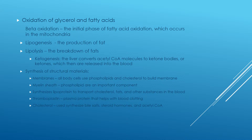Synthesis of structural material: all body cells use phospholipids and cholesterol to build membranes. Phospholipids are an important component of myelin sheaths. The liver synthesizes lipoproteins to transport cholesterol, fats, and other substances in the blood. Thromboplastin is a plasma protein that helps with blood clotting. Cholesterol is used to synthesize bile salts, steroid hormones, and acetyl-CoA.